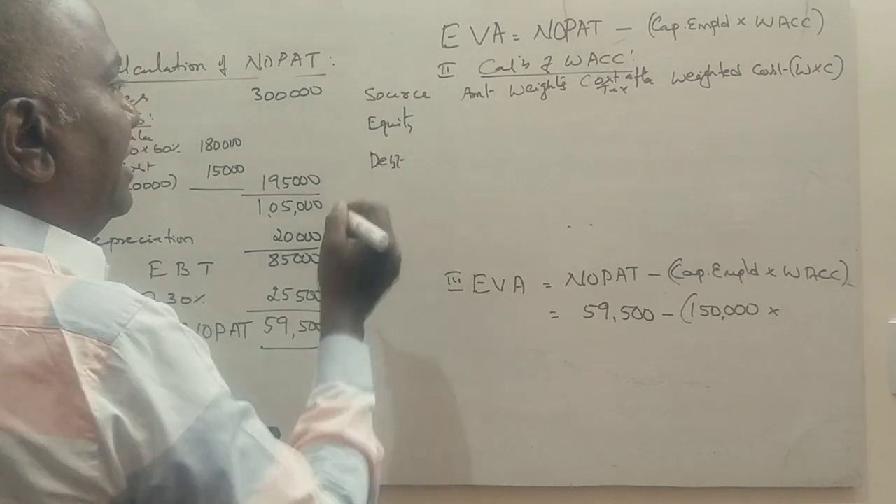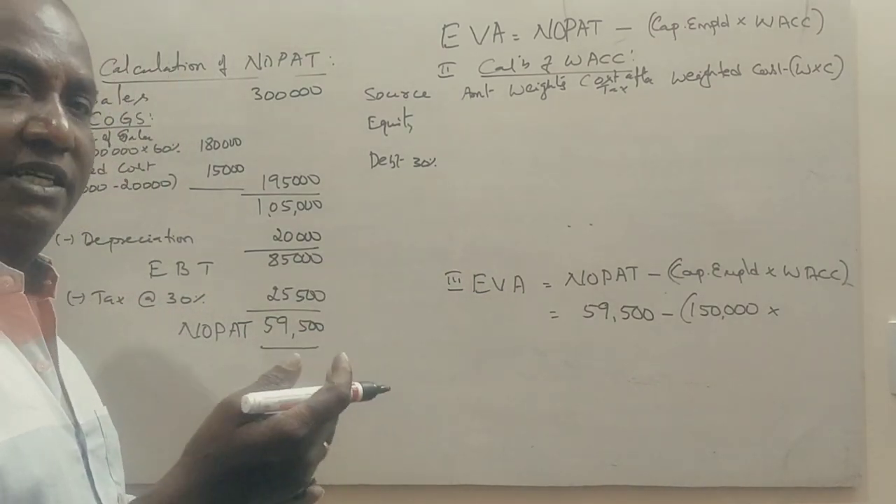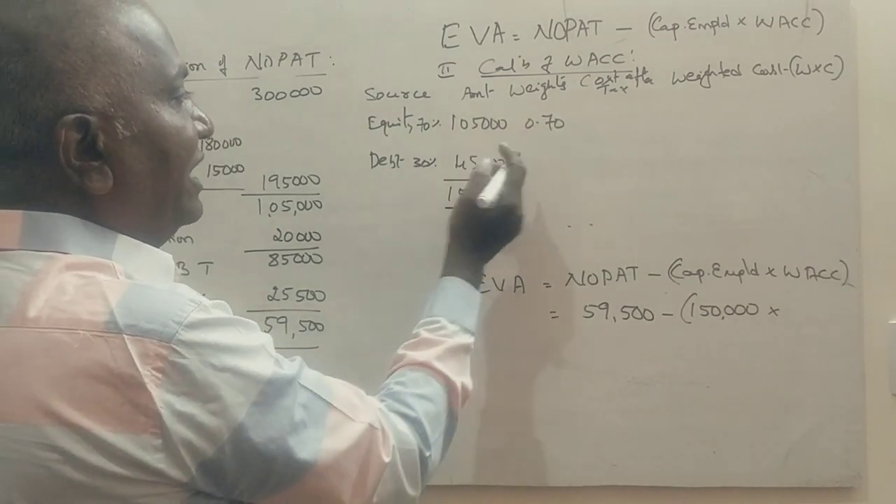We have two sources: equity and debt. Debt is 30 percent. If 30% is debt, then 70 percent is equity. So total is 1 lakh 50,000 capital employed. 30 percent of 1 lakh 50,000 is 45,000 debt, and 1 lakh 5,000 is equity. So 1 lakh 5,000 divided by 1 lakh 50,000 equals 0.7, and 45,000 divided by 1 lakh 50,000 is 0.3.